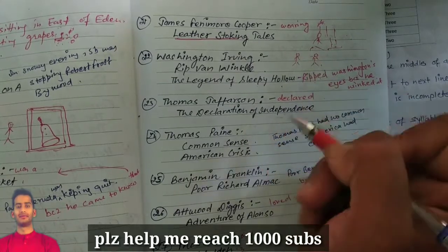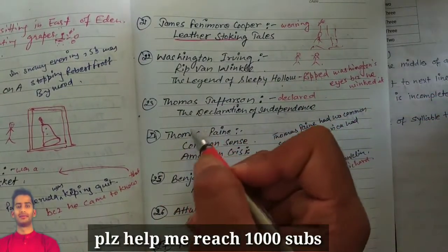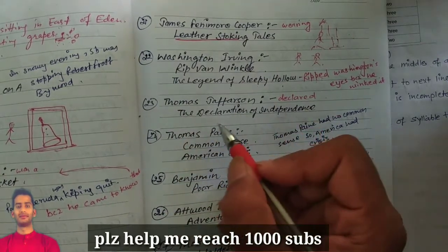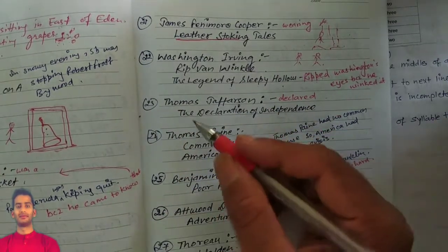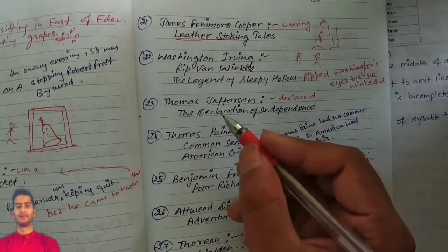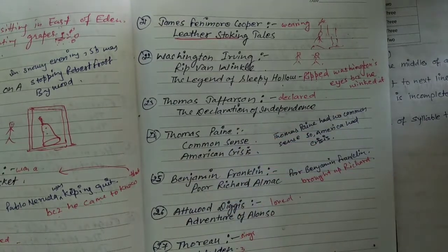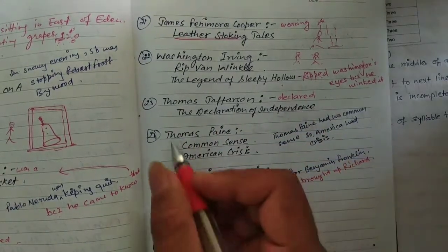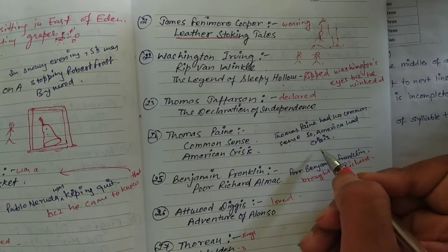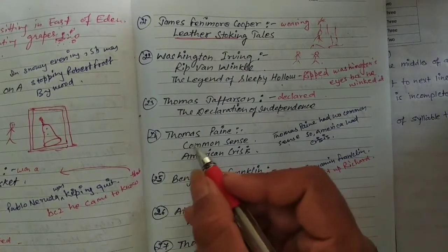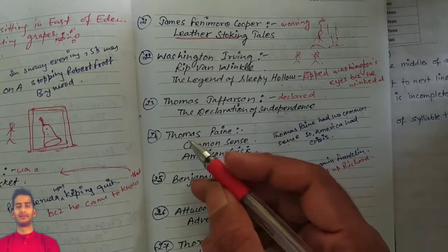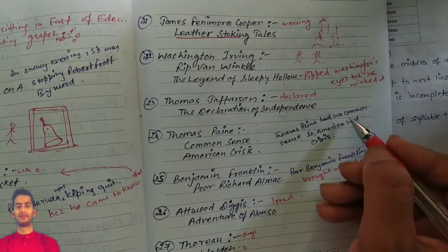Thomas Jefferson declared the Declaration of Independence. Thomas Jefferson declared the independence, so remember this work with this sentence. Thomas Paine, Thomas Paine had no Common Sense, so America had crisis because Thomas Paine had no common sense.